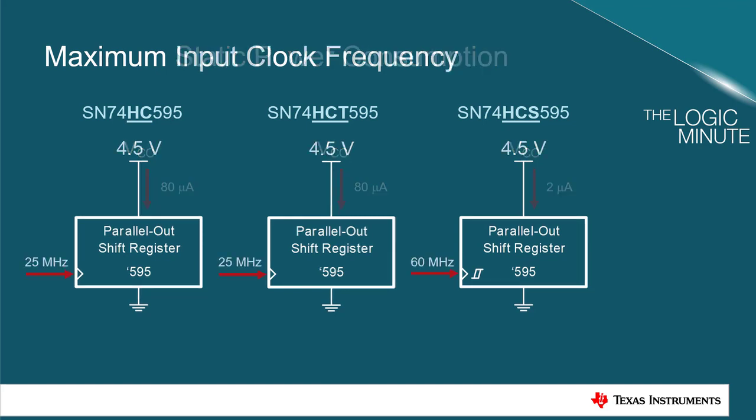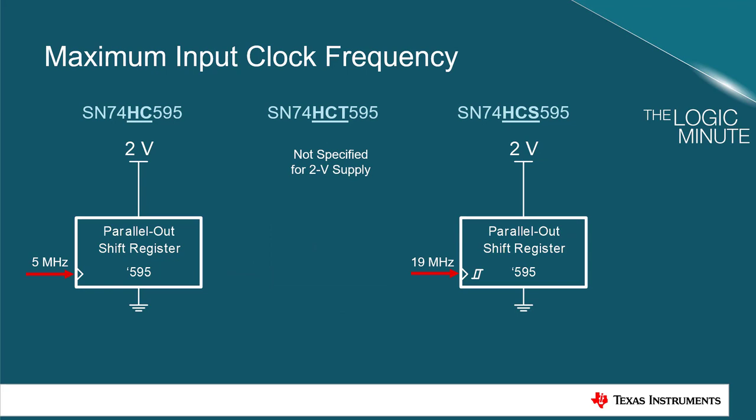The HCS family also has the benefit of operating at more than double the speed in the 5 volt operating range, and nearly four times the speed for 2 volt operation.